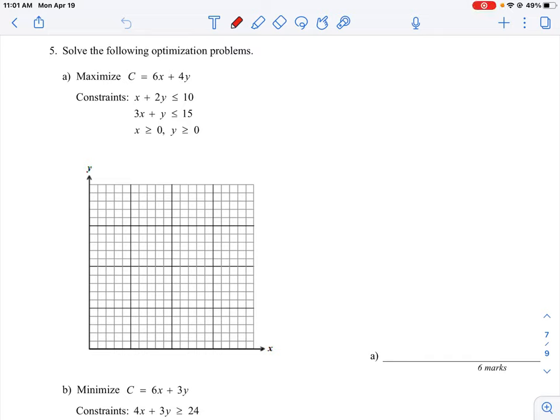Okay, so let's take a look at how we can do this question, where we're asked to maximize a cost function, which they give you here as 6x plus 4y, and the constraints on the system are given by the following equations.